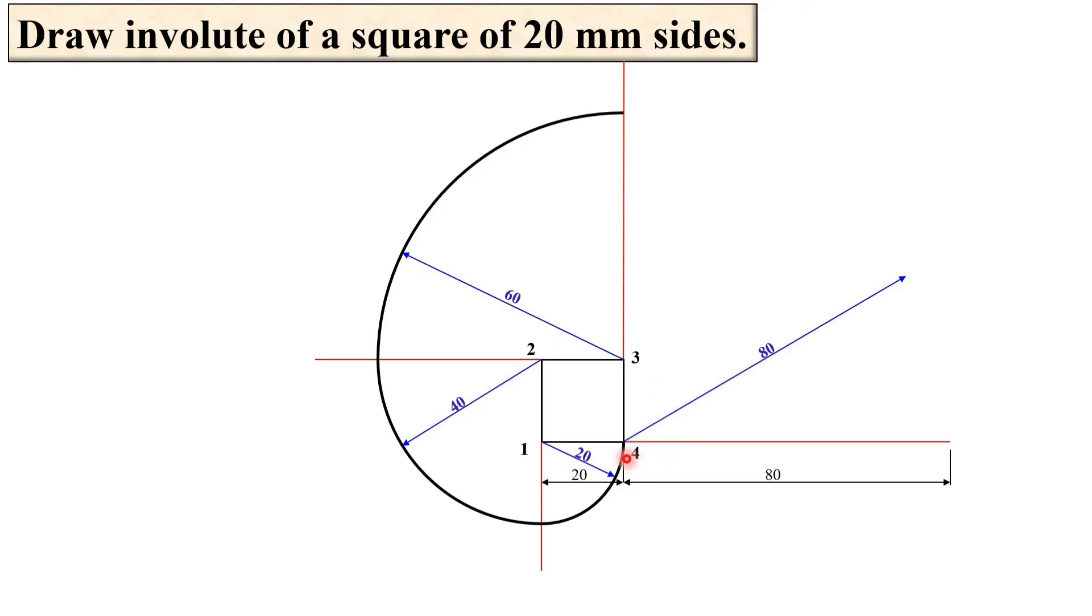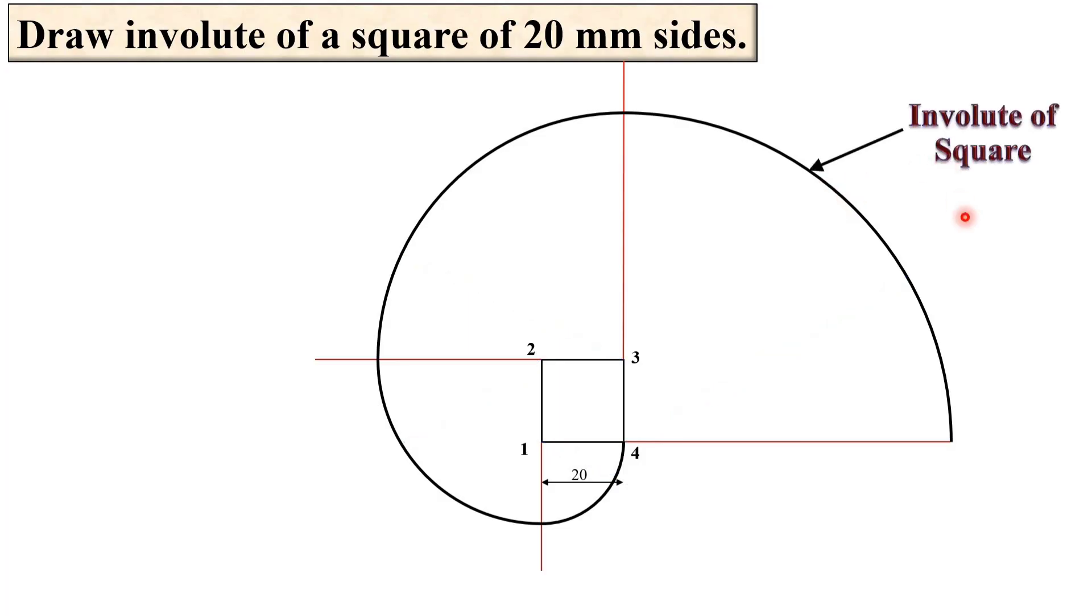4 as the center and radius is equal to 80. Draw the arc with the help of the compass. So this is actually involute of the square. It is so simple to draw the involute in case of polygon.